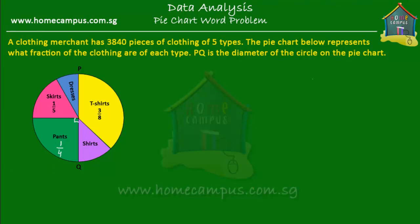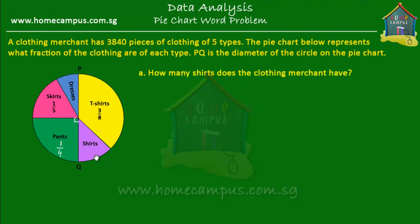The first question is: how many shirts does the clothing merchant have? The shirts are here. We don't know what fraction of the clothing is shirts, but we can find that out easily. We know that the t-shirts and the shirts together are half of all the pieces of clothing, because PQ is the diameter and that diameter divides the pie into two halves.